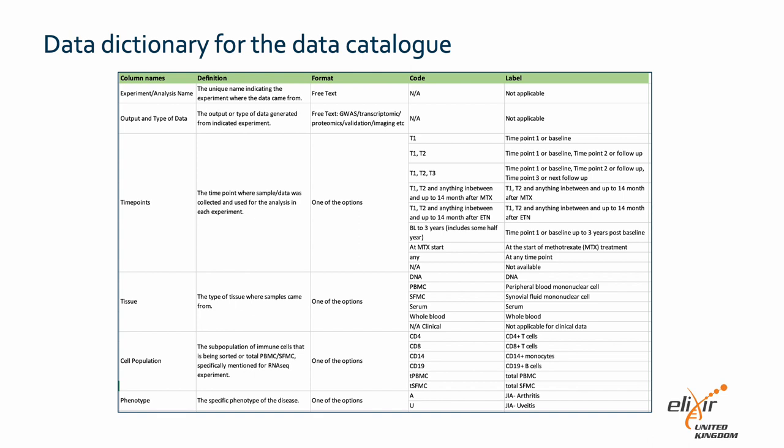This slide shows the data dictionary for a data catalog. Here, we clearly define what each of the columns or metadata represents and what would be the valid responses in the data catalog. This is relatively straightforward to do and will save time when answering questions about the data catalog, especially for people not familiar with using it. In theory, this will answer most of their questions.